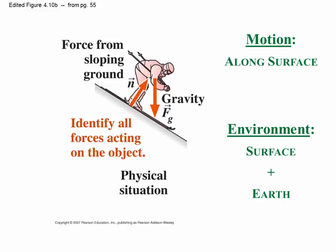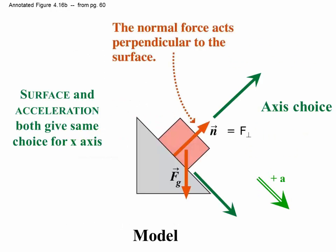That's the physical situation, the drawing of the problem. We can model that as a block or some just lump of mass on an incline surface. And here I've annotated that to indicate that we do have a normal force that's perpendicular to the surface, and motion that is parallel to the surface, and we have chosen axes based on that surface and that acceleration so that the x-axis is parallel to that surface.